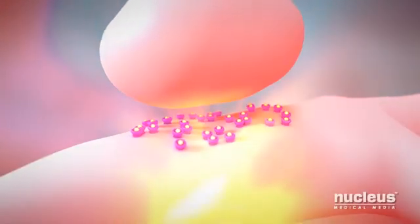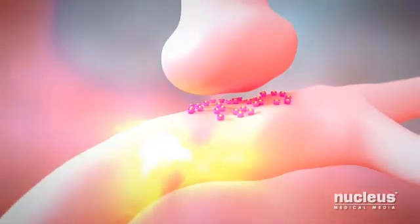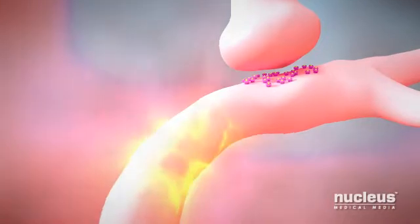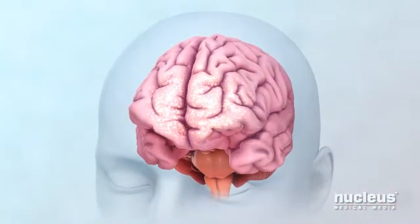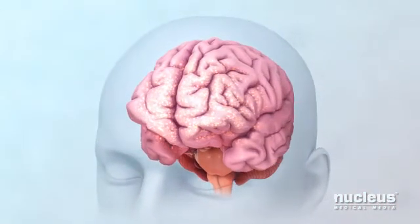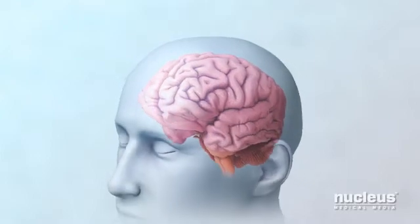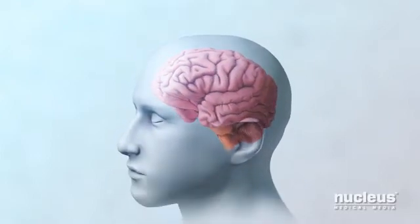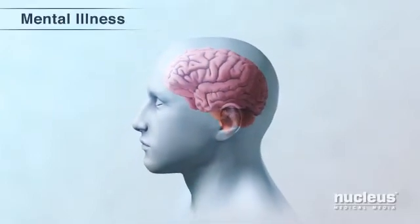This triggers the neuron to produce its own impulse. In this way, impulses spread across the brain. Problems with this process may result in brain disorders known as mental illnesses.